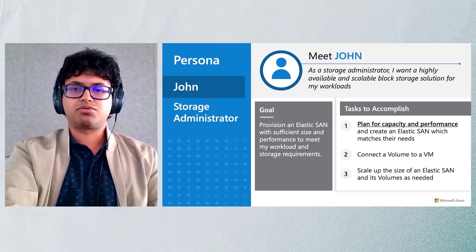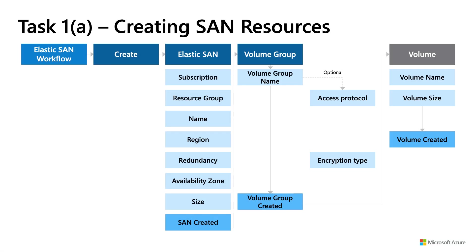I'll now walk you through the creation workflow for Elastic SAN. You start off by creating the SAN, with the Elastic SAN, volume group, and volumes as the resource hierarchy. Resources are provisioned at the SAN level, so you need to think about exactly what kind of workloads you want to host and figure out the respective capacity and performance requirements. If you want more performance, you should provision more base capacity. If you want more storage, you can provision just additional capacity. The provisioned performance of the SAN will be shared across all the volumes deployed.